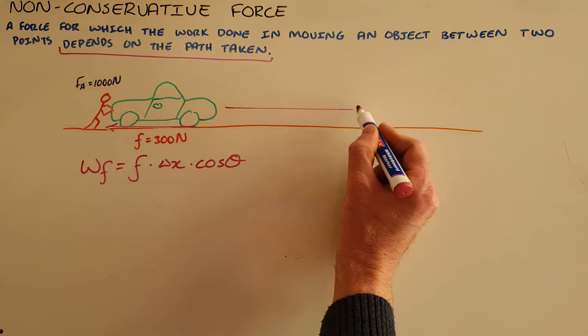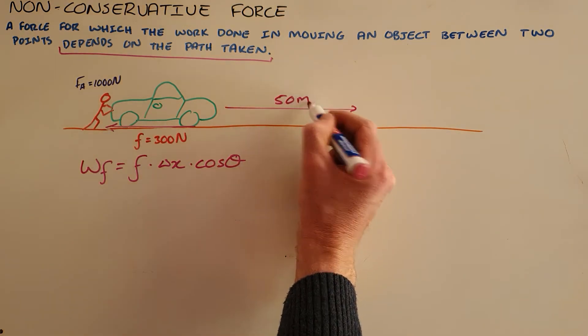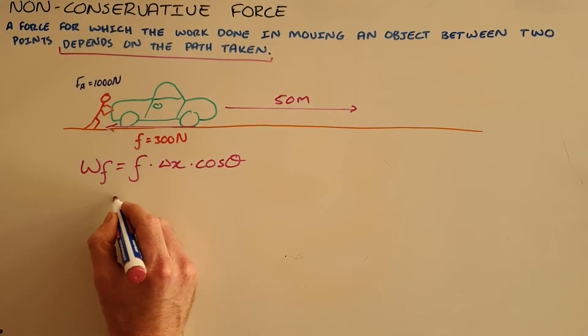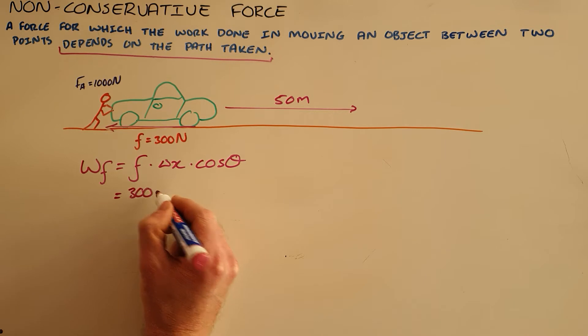We can see here that the object is moving and for argument's sake we'll say that this object moves 50 meters. So we can then say that the work done by friction is equal to the frictional force of 300 newtons